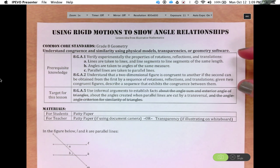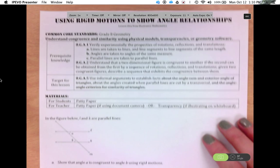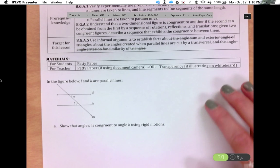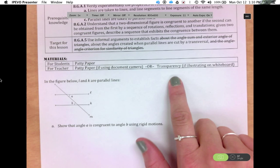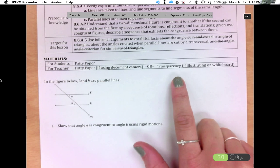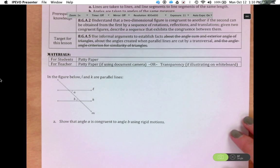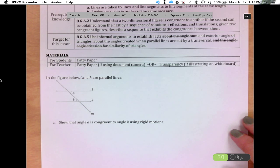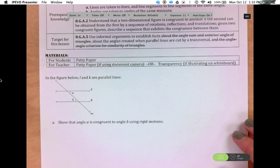So we have some prerequisite knowledge before doing this lesson, and the target for the lesson is using informal arguments to establish facts about the angles created when parallel lines are cut by a transversal. So the materials needed are patty paper. If you are not using a document camera, then you may want to use a transparency from the overhead so that you have a bigger space to copy on and the students can see what you're doing up at the board.